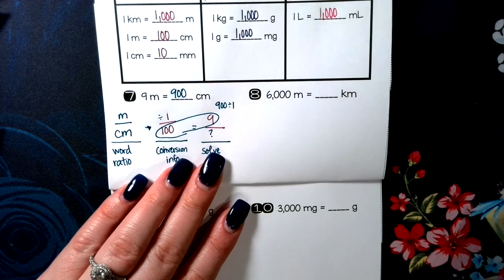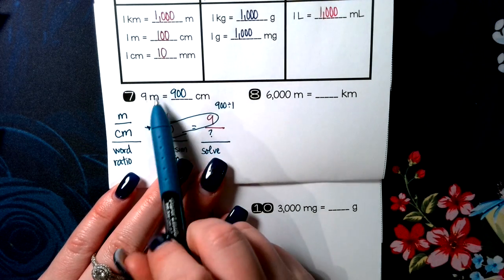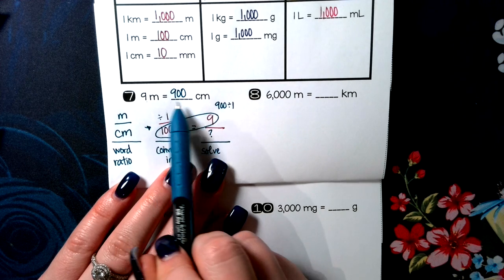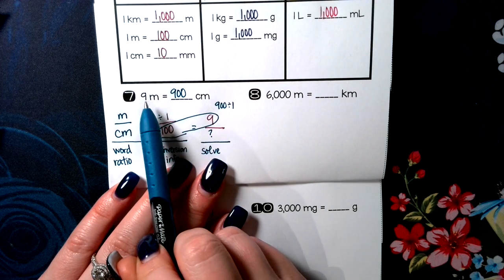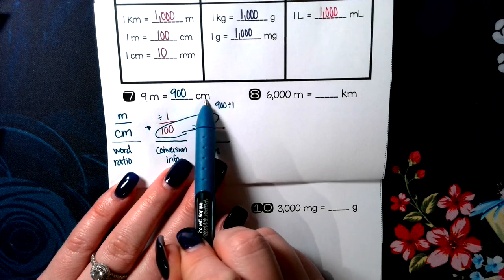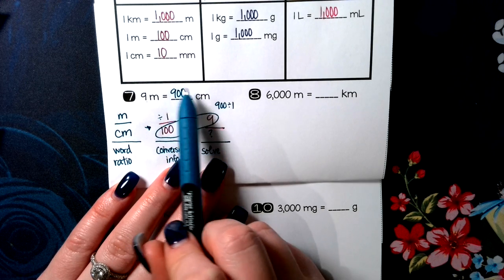It's a good way to check back and think. If I'm going from meters to centimeters, my unit is getting smaller. So that means my number should be getting bigger. The smaller the unit, the bigger the number.